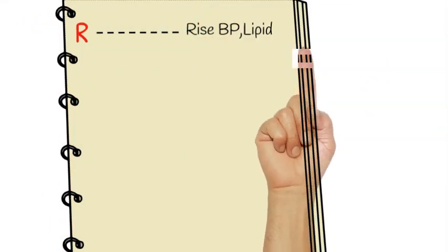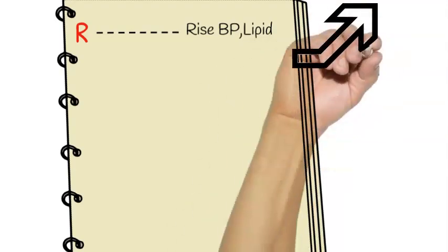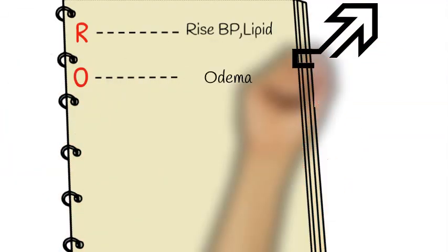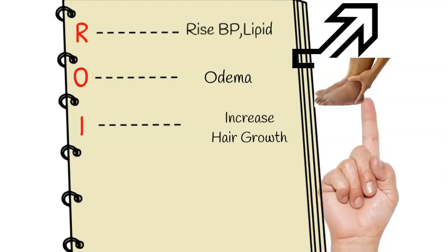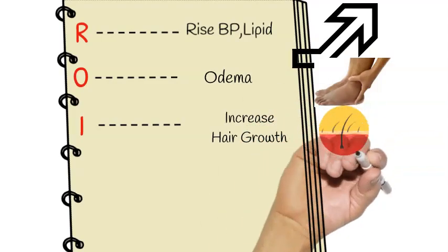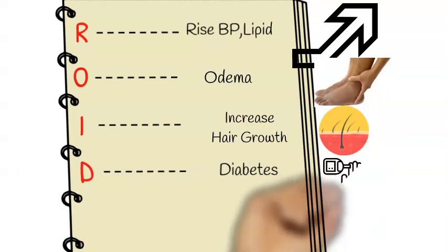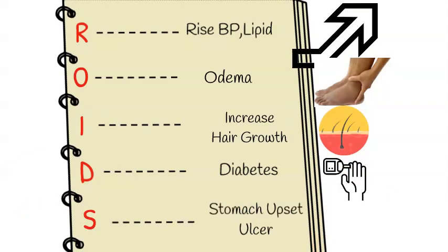R is for raising blood pressure and lipid profile. O is for edema. I is for increased hair growth. D is for diabetes. S is for stomach upset and ulcer.